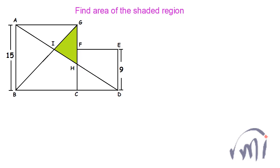Here we have a problem sent by Manish from India. We have to find the area of the shaded region where ABCG and CDEF are two squares. The side of square ABCG is 15 units and each side of square CDEF is 9 units.